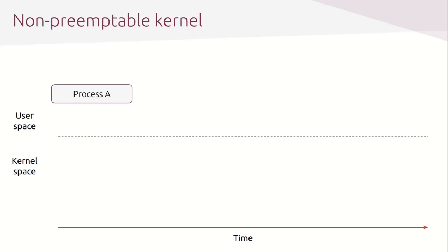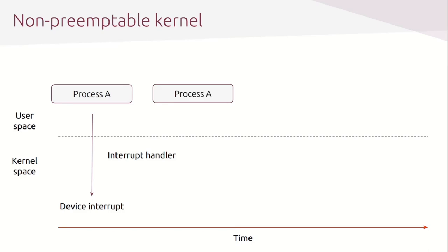Usually a process is executing in user mode and then it switches to kernel mode when requesting a service provided by the kernel. The moment the kernel satisfies the program request, the program can go back to user mode. In a uniprocessor system, only one process is running at a time, and it may run in user mode or in kernel mode. Imagine process A starting its execution in user mode. At a certain moment, a hardware device raises an interrupt. As a consequence, process A switches to kernel mode and services the interrupt. Once the interrupt has been serviced, process A resumes execution in user mode.